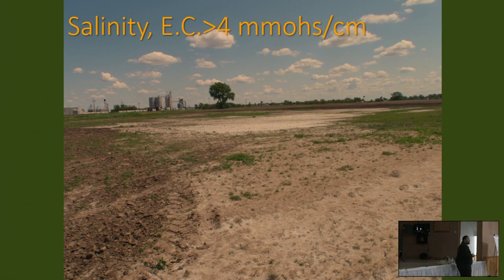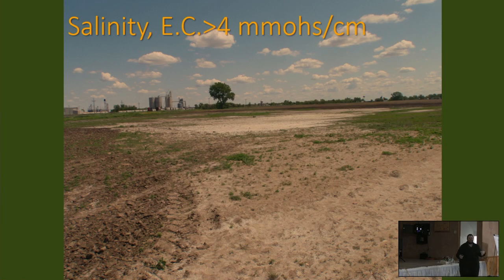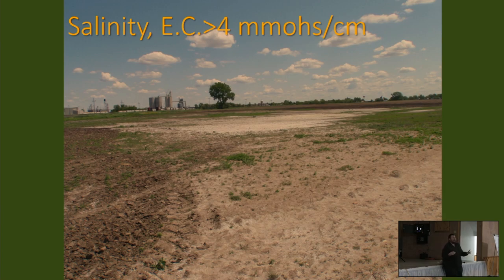This is what a saline soil looks like — lower, wetter areas of those fields. When things get dry, they get all white. When the field is wet, it doesn't have that white look because these salts dissolve in water — they're water-soluble salts. Once things dry out, they precipitate out and the field gets that white appearance. What's happening is that salt is holding on to water and preventing water uptake from the crops you want to grow there.